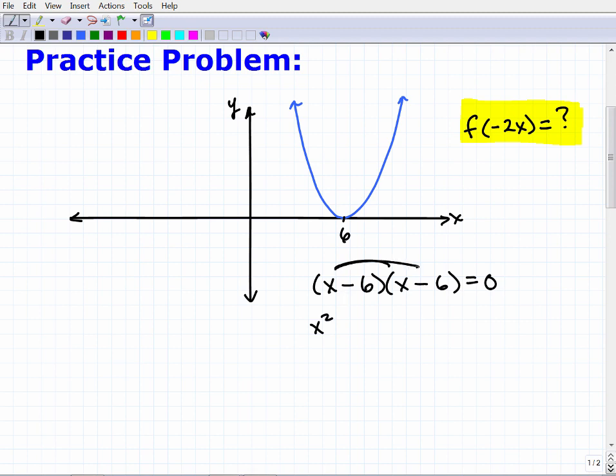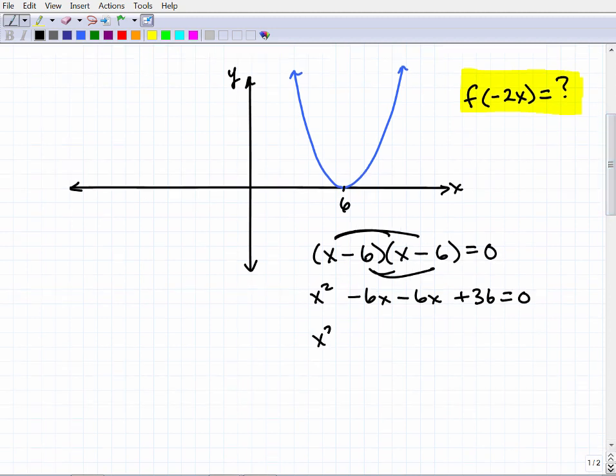So that's x squared, that's negative 6x, I got another negative 6x over here. And then I have a positive 36, alright, and let's clean this up.